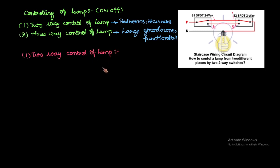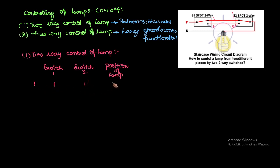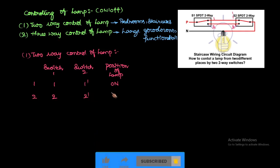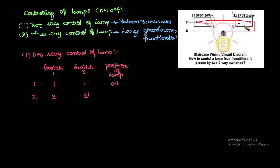From two positions — switch 1 and switch 2 — whenever you connect 1 and 1-dash, a closed path is formed and the lamp is in ON condition. Similarly, whenever you connect 2 and 2-dash, a closed path is also formed and the lamp is once again in ON condition.